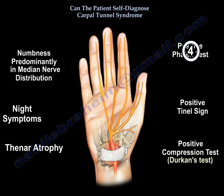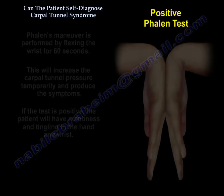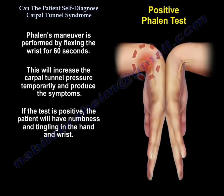The Phalen's test is performed by flexing the wrist for 60 seconds. This will increase the carpal tunnel pressure temporarily. If the test is positive, the patient will have numbness and tingling in the hand and wrist.